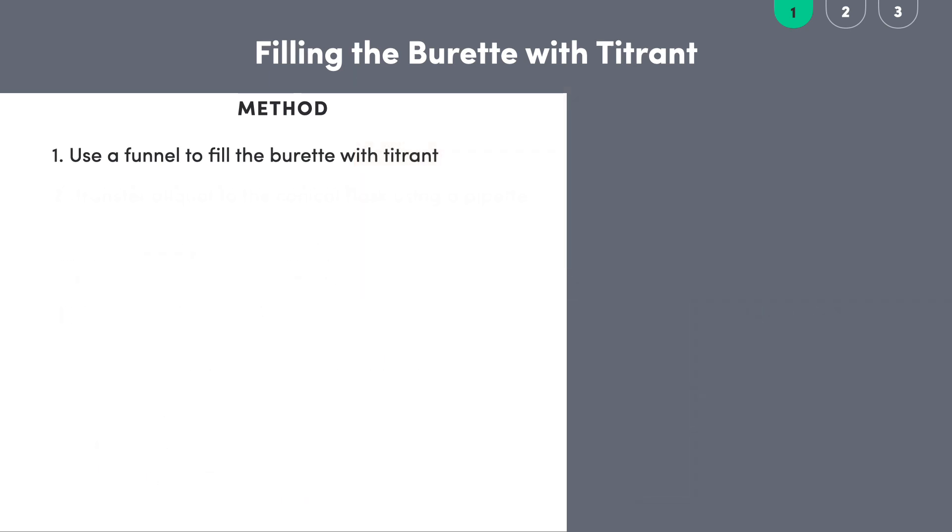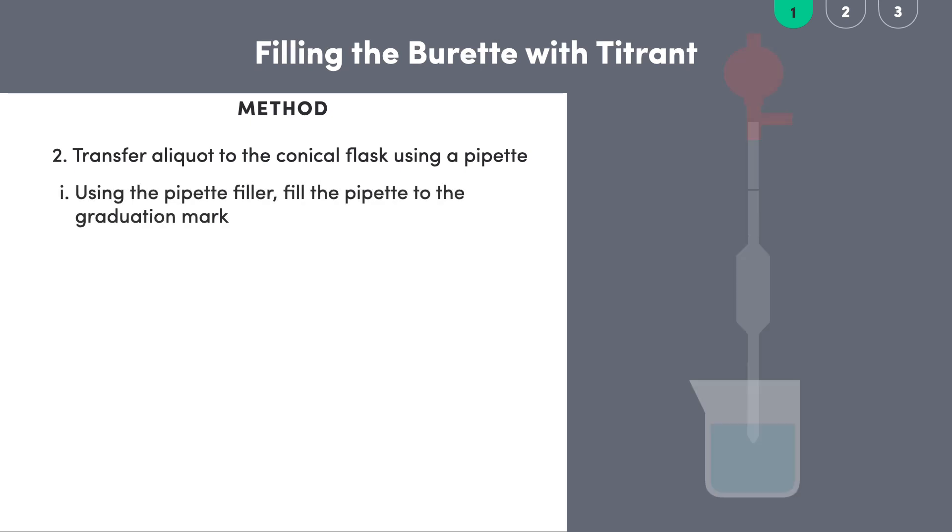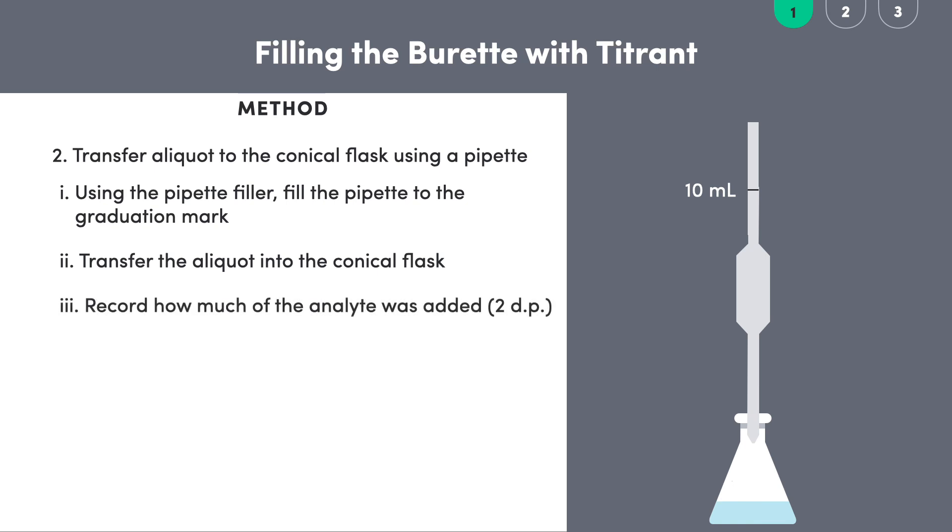Now that our burette is all set we'll move on to transferring a precise aliquot of sulfuric acid, our unknown solution or analyte, into the conical flask using a volumetric pipette. Filling the volumetric pipette with the analyte may require a bit of practice using a pipette filler which is basically a pump. We fill the pipette to above the graduation mark which indicates the precise volume of the pipette, in this case 10 milliliters. Then we gently release some of the solution until the bottom of the meniscus lies directly on the graduation mark. We then transfer this 10 milliliter sample of sulfuric acid into the conical flask by taking off the pipette filler, allowing the solution to run out of the bottom. In terms of the volume we record for our calculations, the pipette is precise enough to tell us milliliters to two decimal places, so here we can say we have added 10.00 milliliters of analyte to the conical flask.